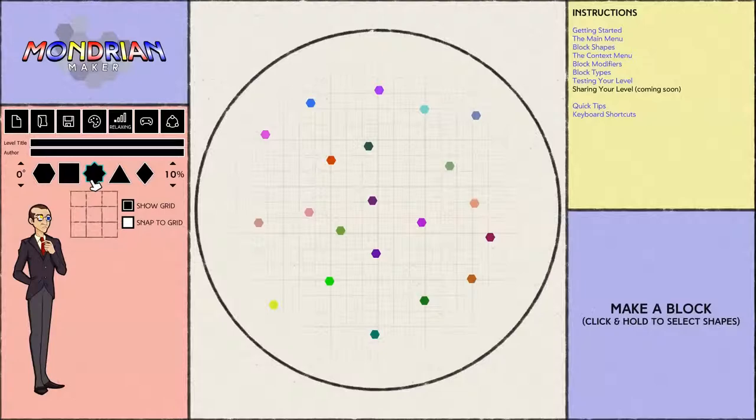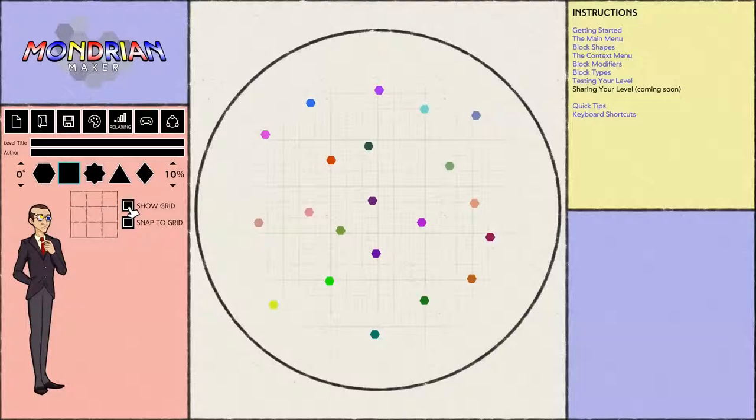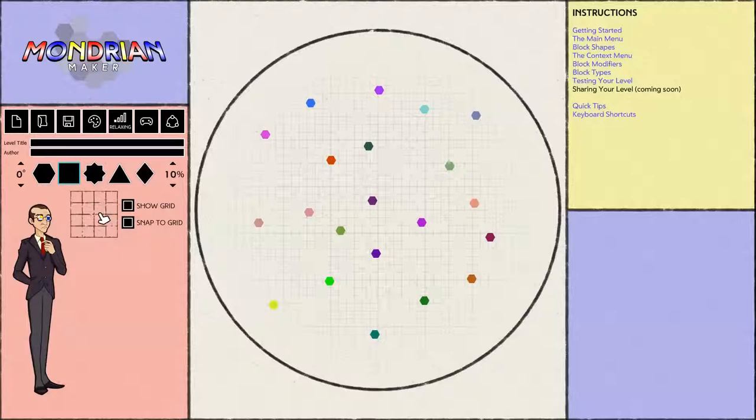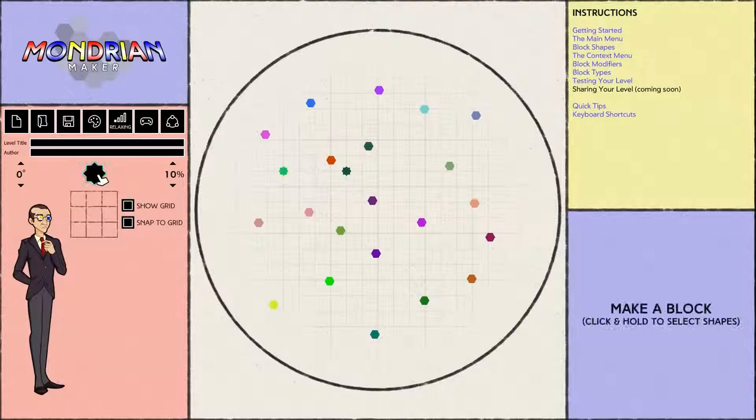But before I get into building, we've got one last set of tools to explore. One of the most requested features for Mondrian Maker has made it in as version EX2, and that's the grid. The grid is not only a visual aid for your blocks, but if you toggle snap to grid, any blocks you create will align with the grid itself. You can turn off show grid to toggle the grid's visibility, and you can change the size of the grid by clicking on the grid preview. The grid can be 10, 20, 30, or 40 pixels. This gives you a pretty decent range of options to play around with, and using the grid makes building levels even easier.